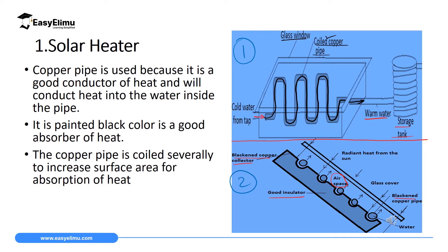The blackened copper pipes absorb maximum heat and conduct it efficiently since copper is the best conductor of heat. There is also a glass cover, whose function we will discuss shortly. The radiant heat from the sun passes through the glass cover, into the airspace, and then into the blackened copper collector and the copper pipes.